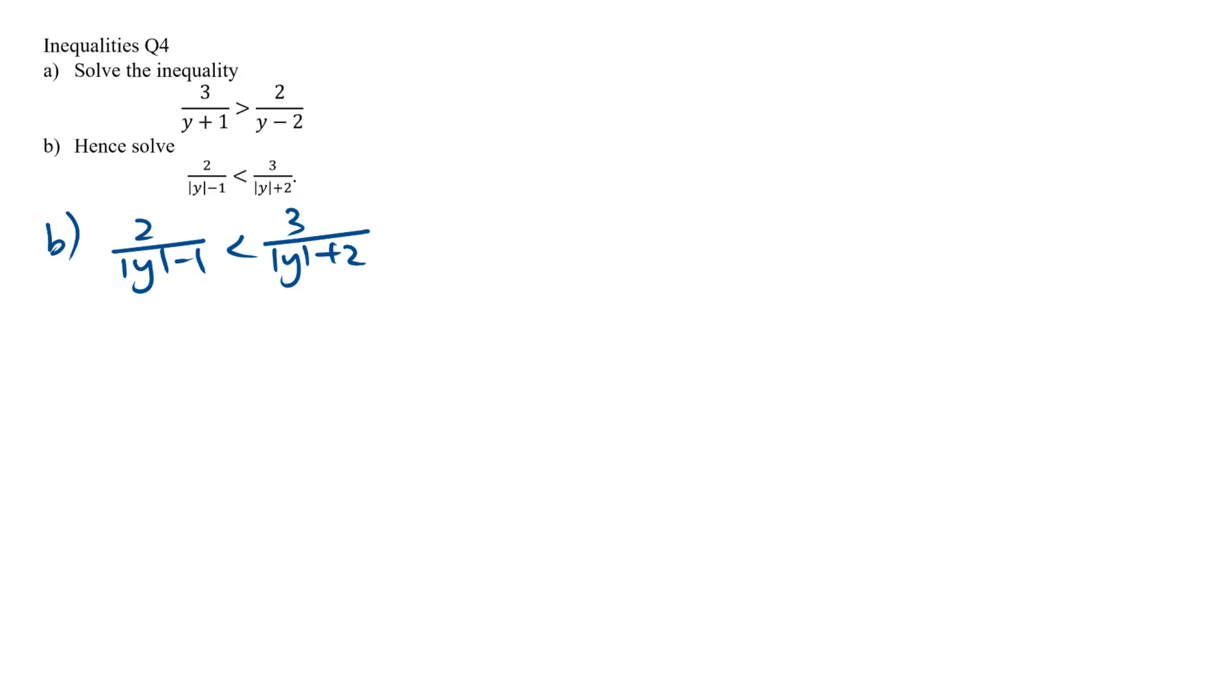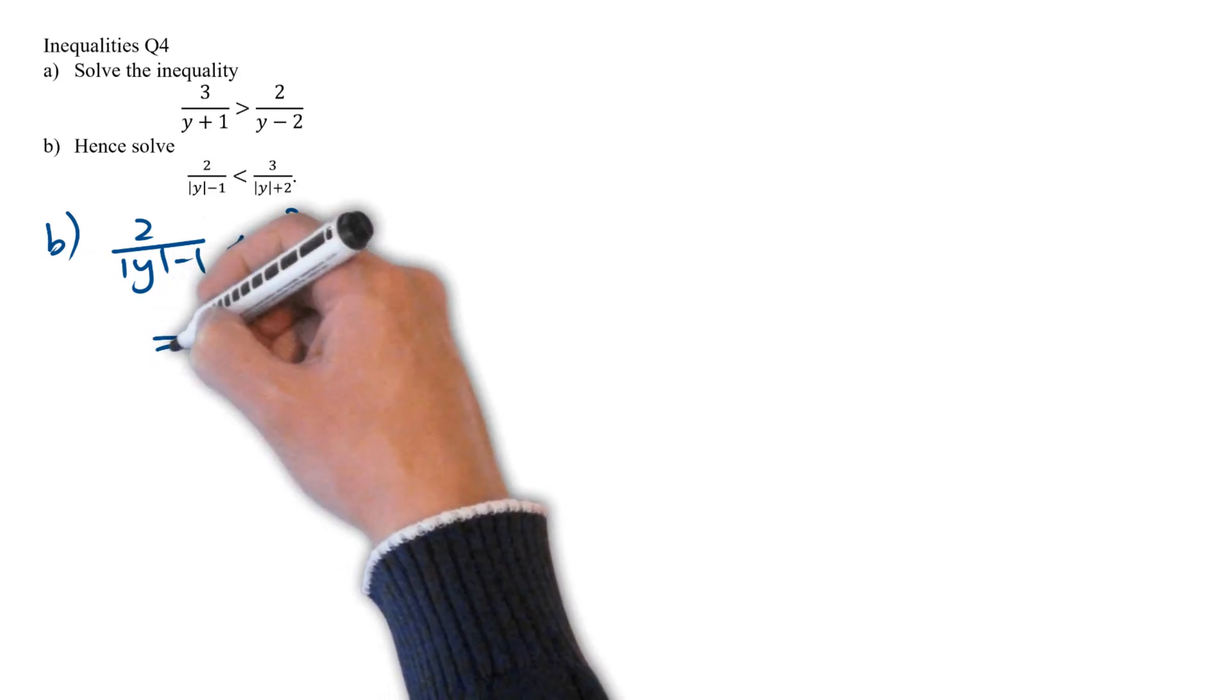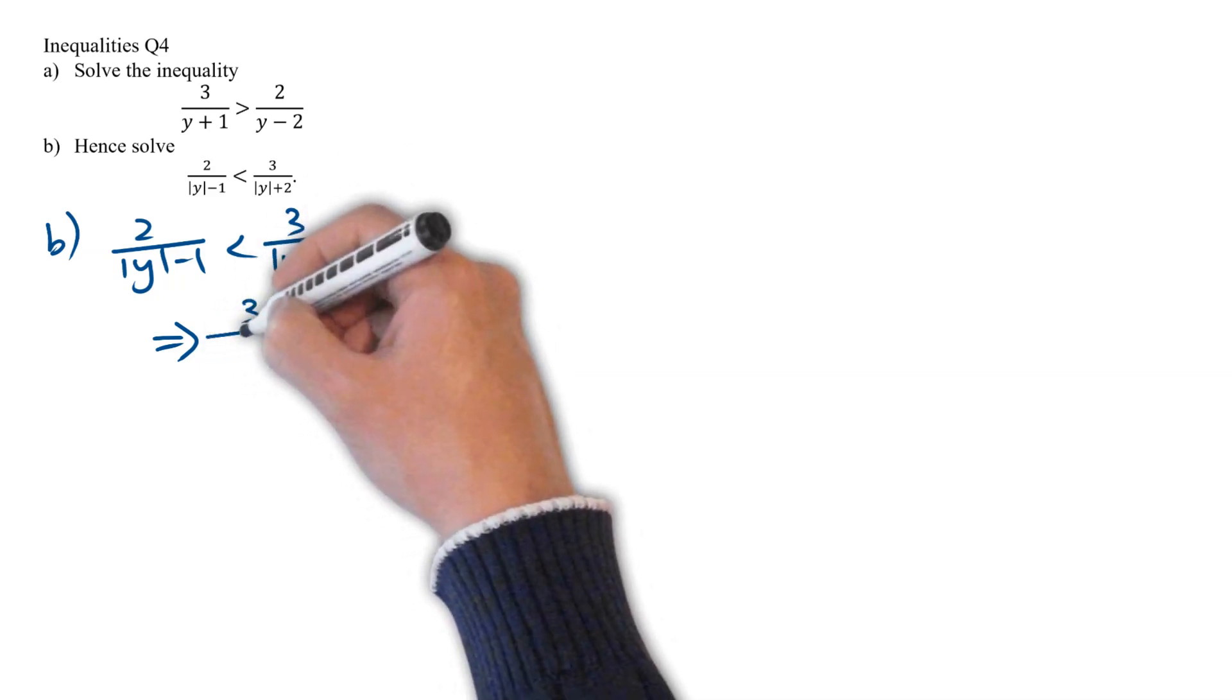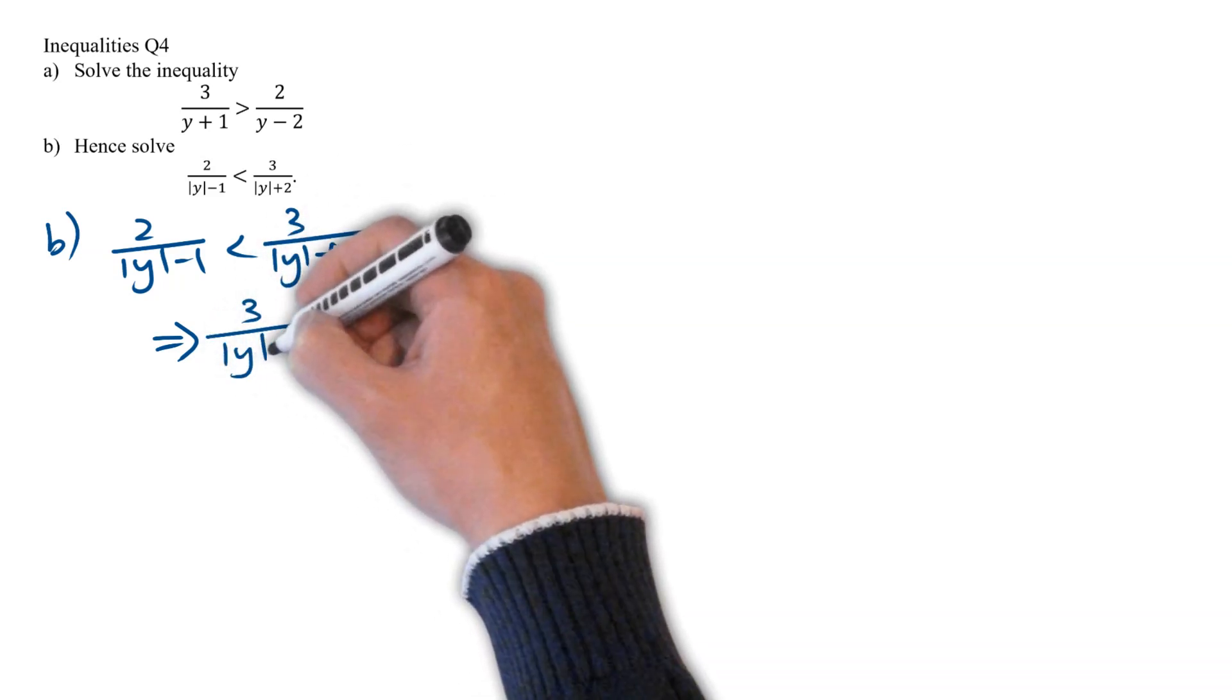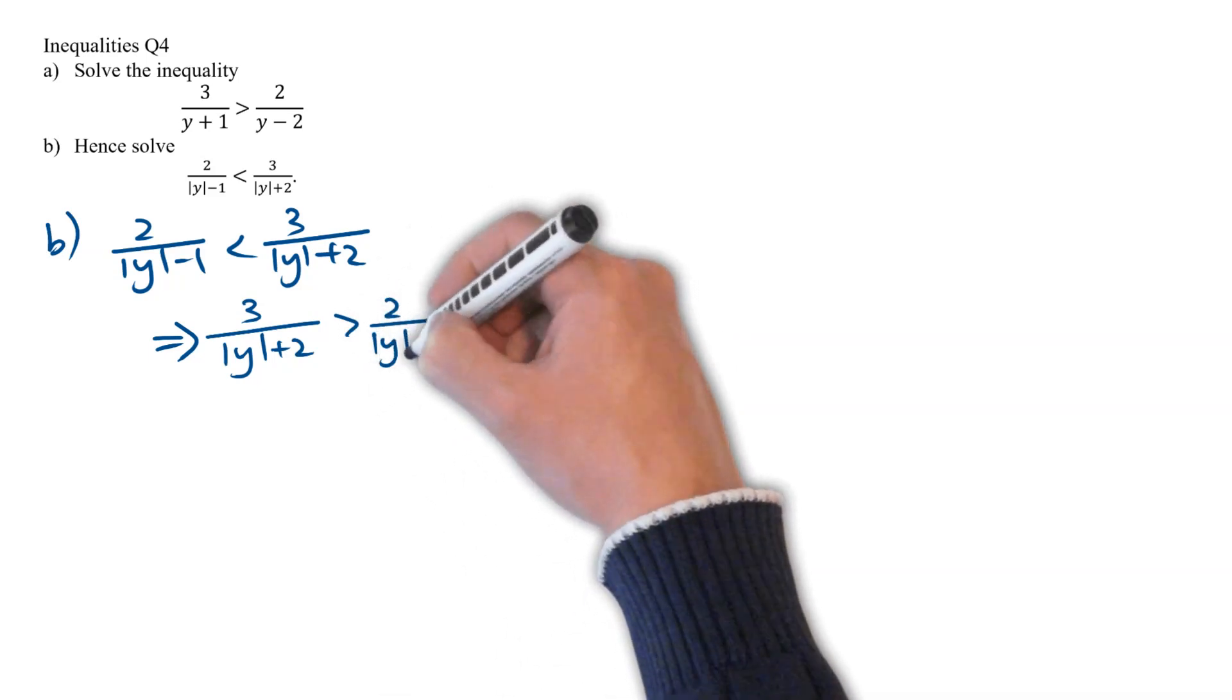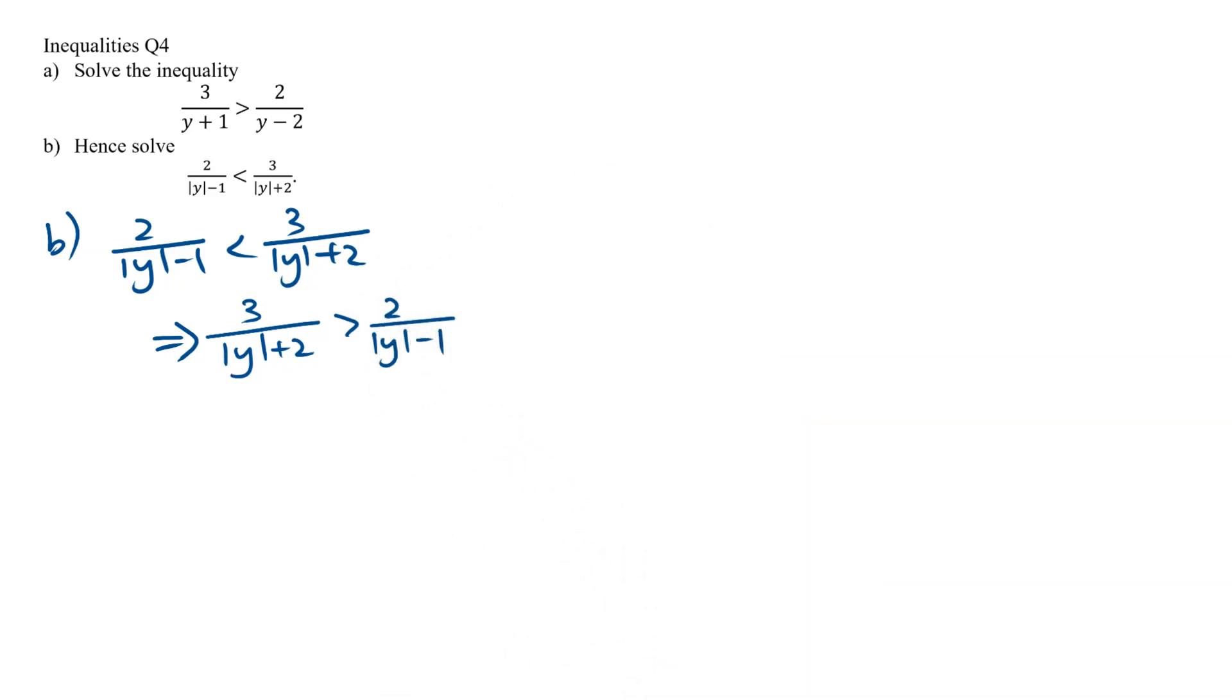First, we know that everything has been swapped, in a sense that the 2 and the 3 has been swapped, and the inequality sign has been flipped as well. Therefore, we know that if we want to have a meaningful comparison, we will need to mentally swap the 2 terms around.